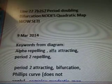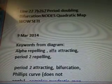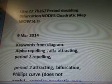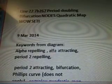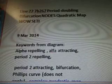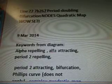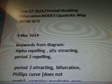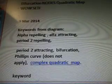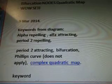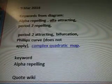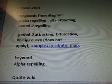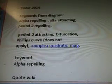So line 227B267: period doubling, bifurcation nodes, quadratic map. WowSETI was our other video. On March 9, 2014, we were going to look at the keywords from the diagram in the previous video.